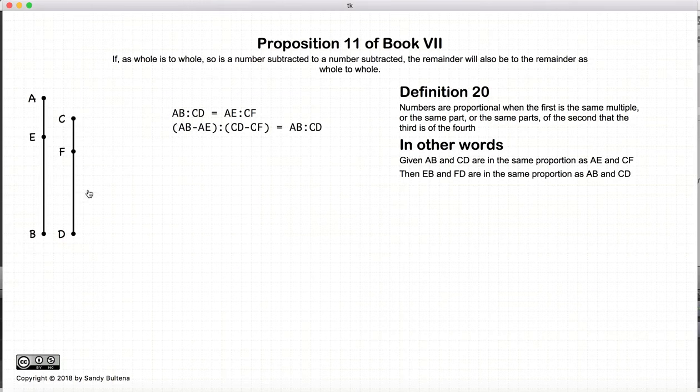EB and FD, or AB minus AE, and CD minus CF, will also be proportional to AB and CD.